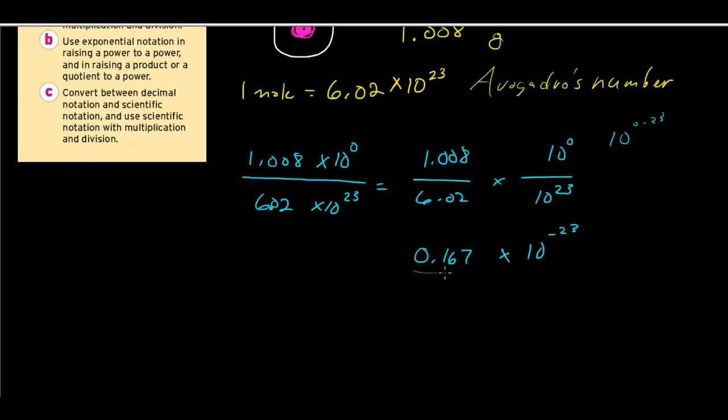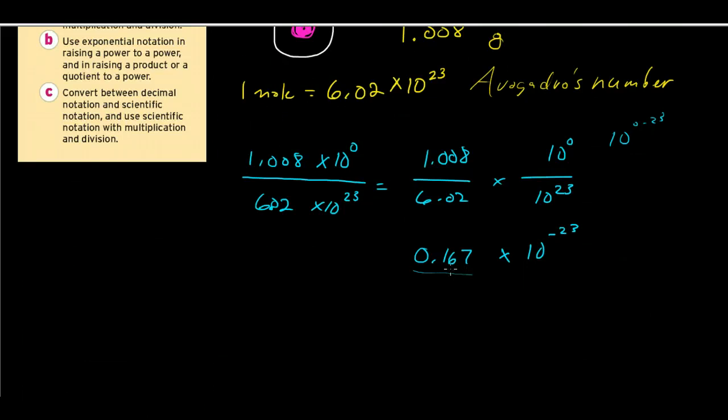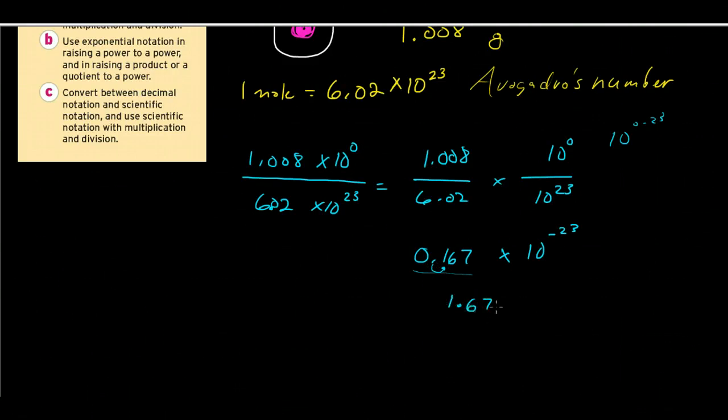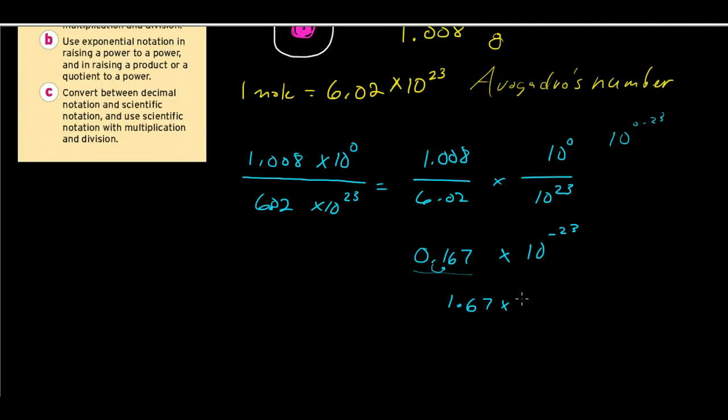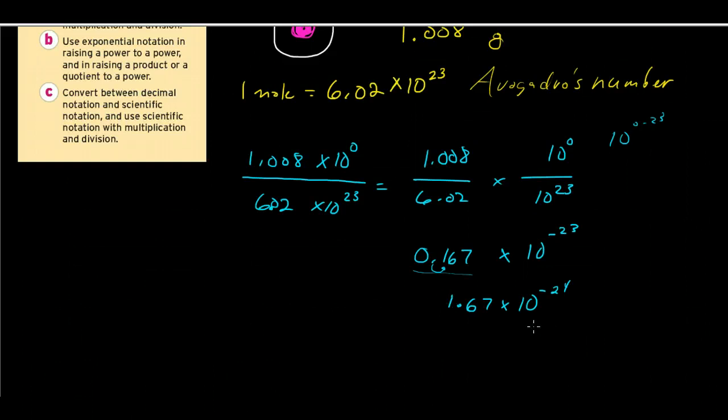Because, remember here, this has to be greater than 1 but less than 10. Right now, it's less than 1, so I'll have to move the decimal over one place to get 1.67. And when I move the decimal over one place this way, that means this number, I'm making this number bigger. I have to make this number smaller. So that'll be 10 to the negative 24th power.